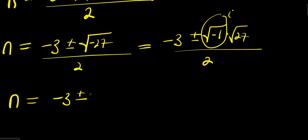This is i times √27, expressing it as 9 times 3, divided by 2.